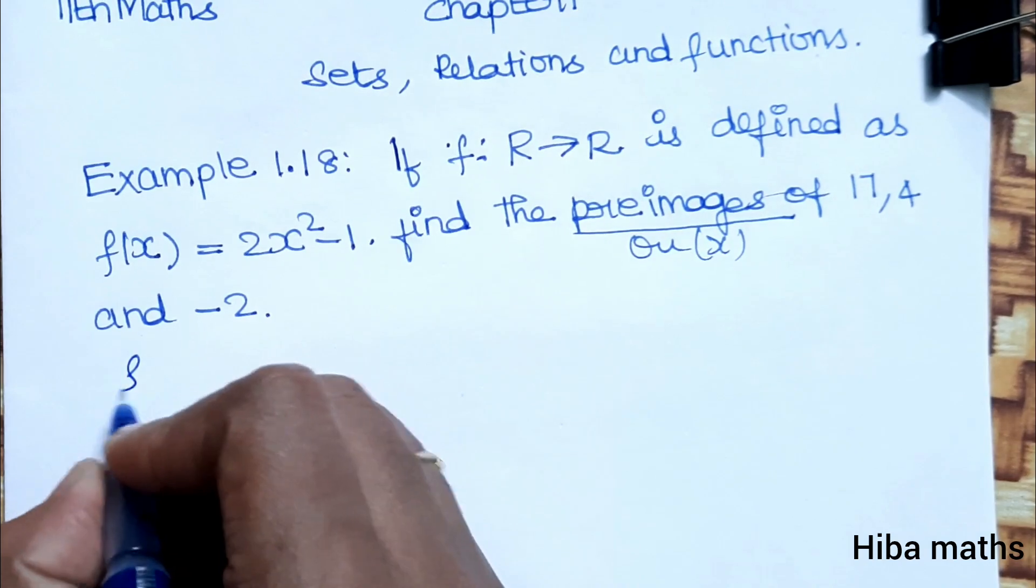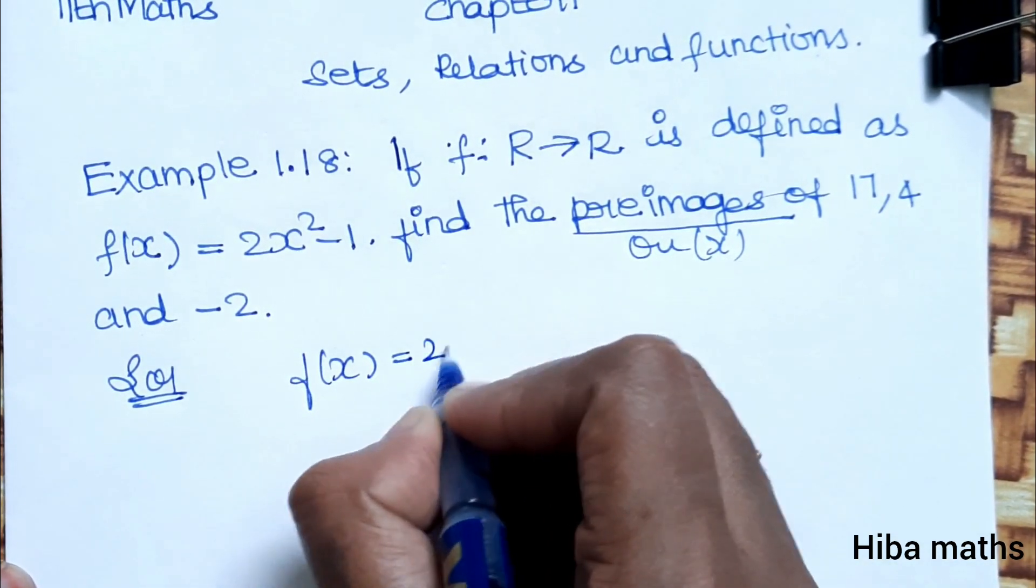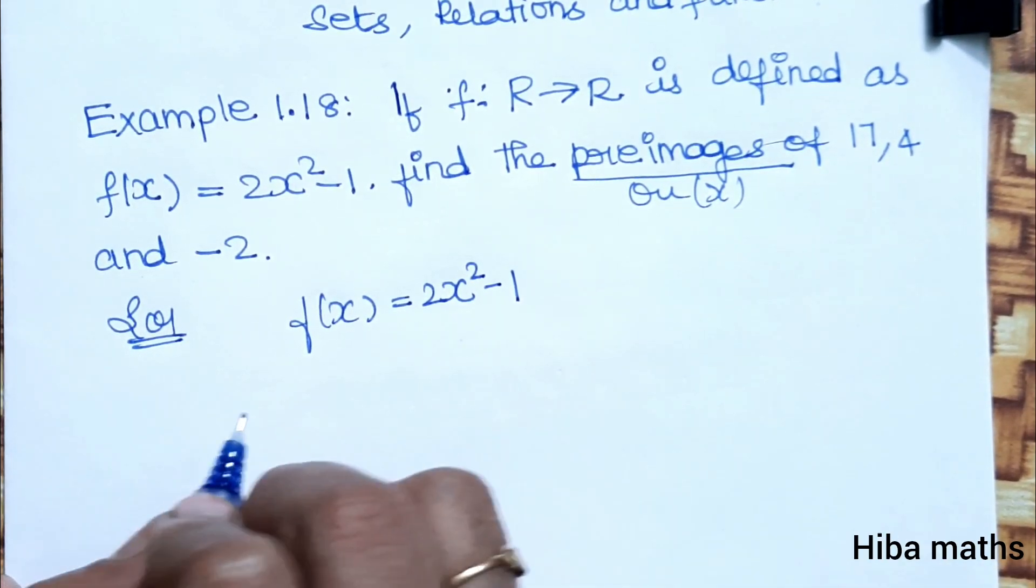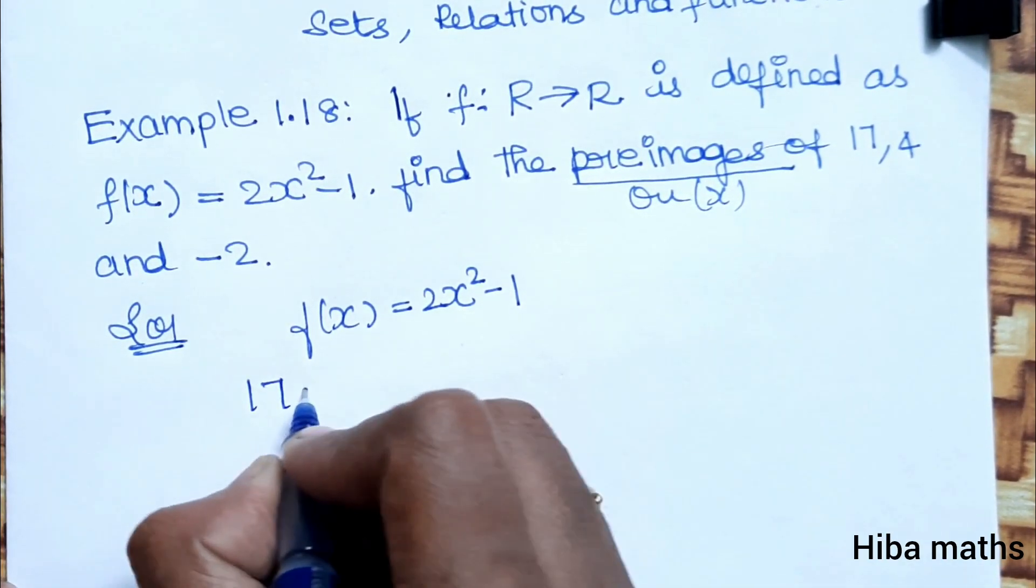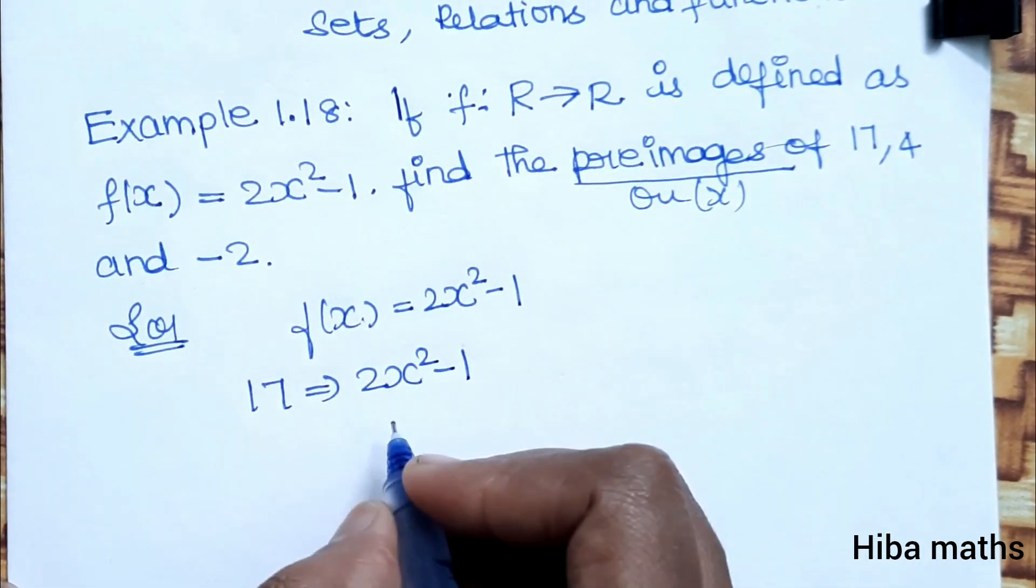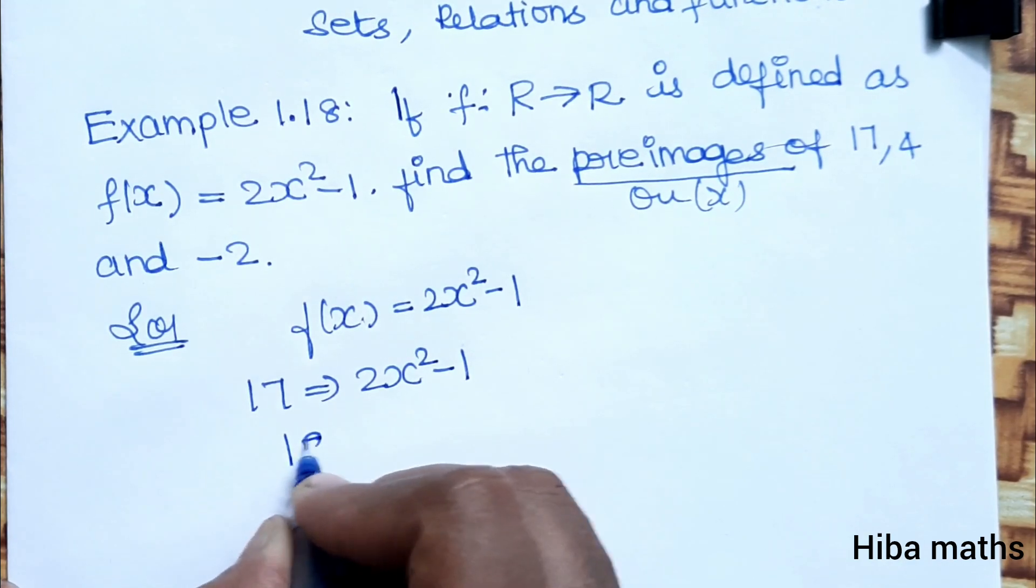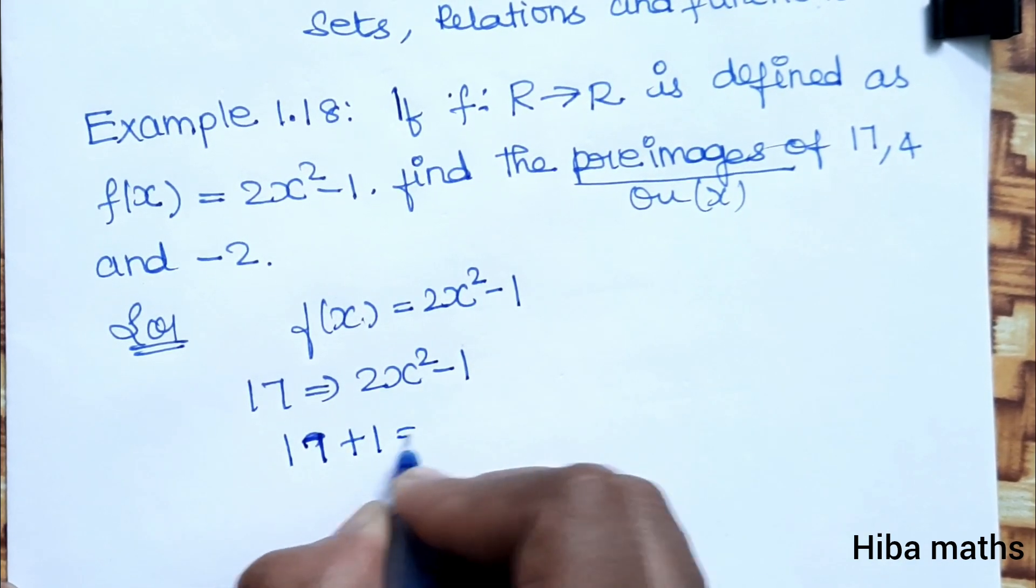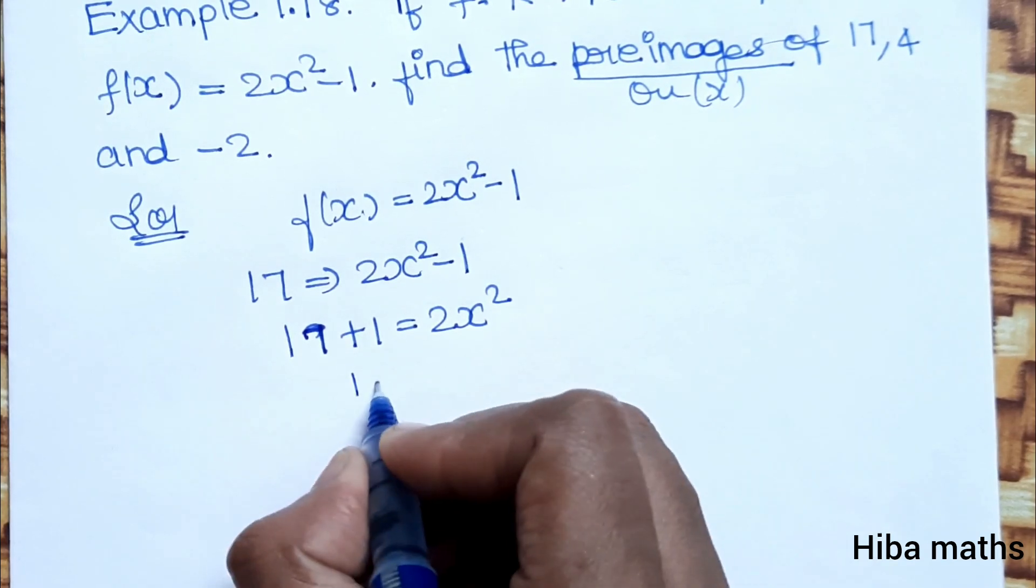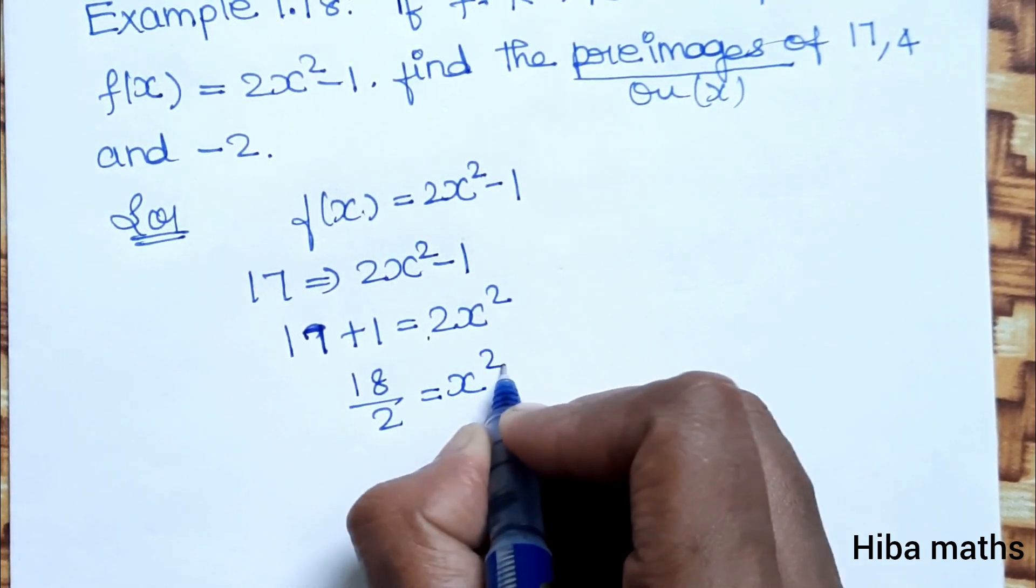So in the solution, the function f(x) is 2x squared minus 1. Now the first preimage of 17: set 17 equal to 2x squared minus 1. Moving minus 1 to the other side, 17 plus 1 equals 2x squared. 17 plus 1 is 18. Dividing by 2, that equals x squared.